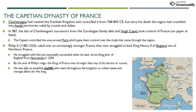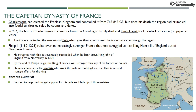Instead of having nobles collect taxes, provide an army for the king, and enforce the laws, Philip begins to appoint people called bailiffs. They are not hereditary landowners — they are more like the bureaucracy, the system of government workers we saw in China, than the system of nobles we see in England. By granting power to these bailiffs, the nobles have less and less control over the king and less ability to leverage their control over taxation and the military.